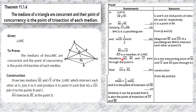Medians AD, BE and CF all pass through point G. G is the intersecting point of medians BE and CF, and AD also passes through G. This was given in our construction — we drew two medians BE and CF of triangle ABC which intersect each other at G, and then showed that AD also passes through G.